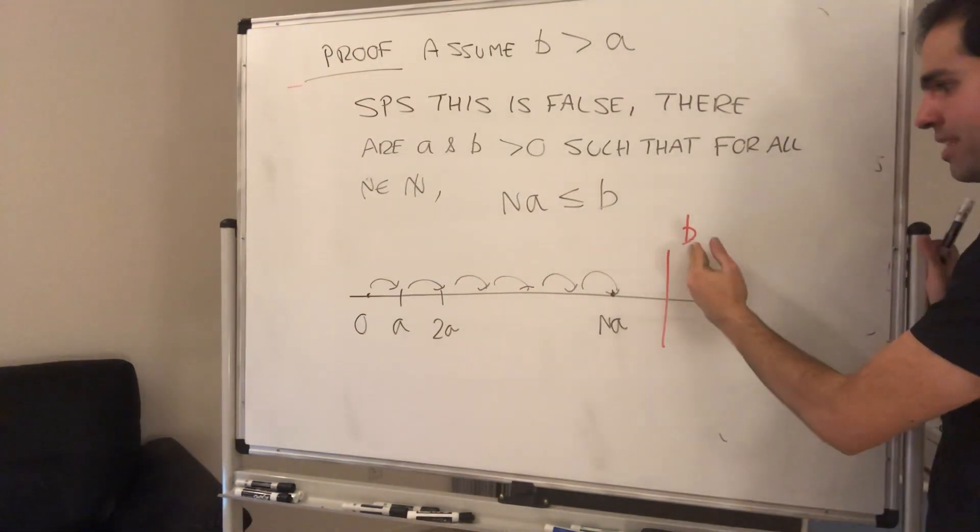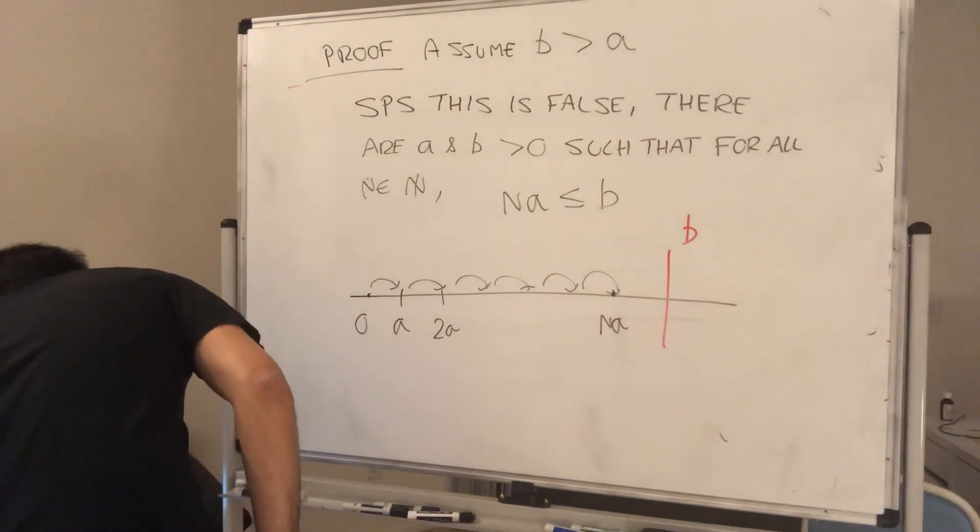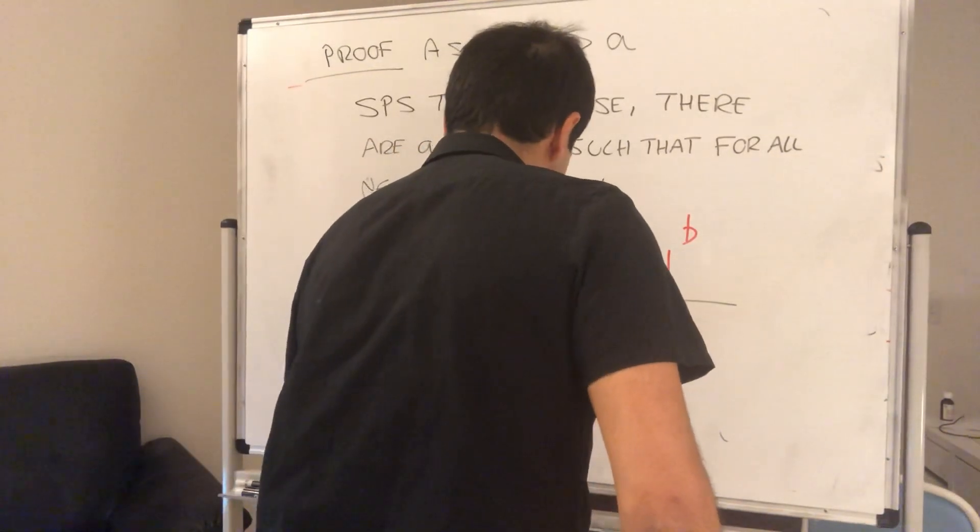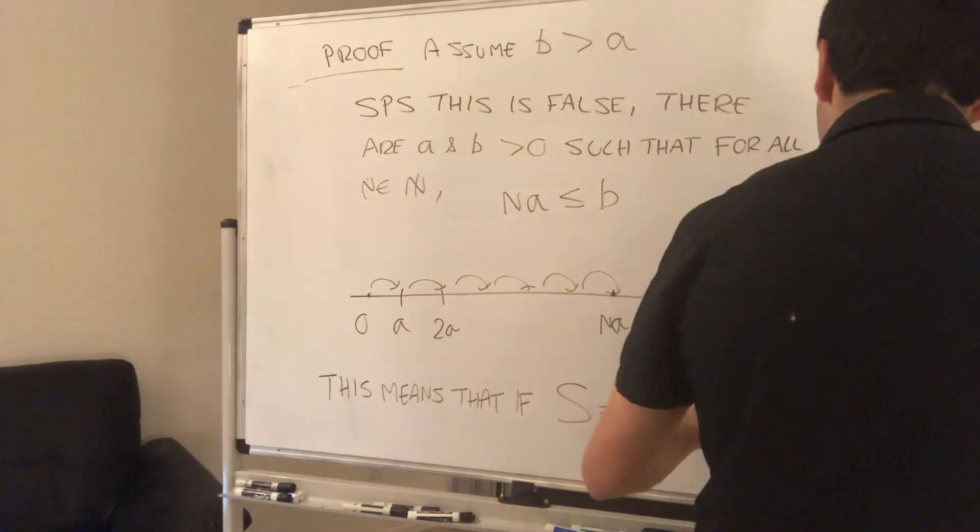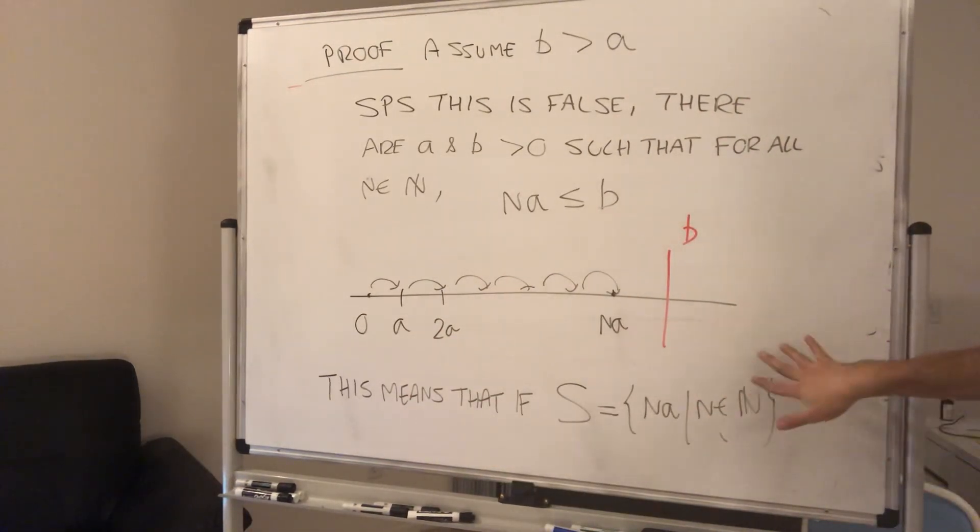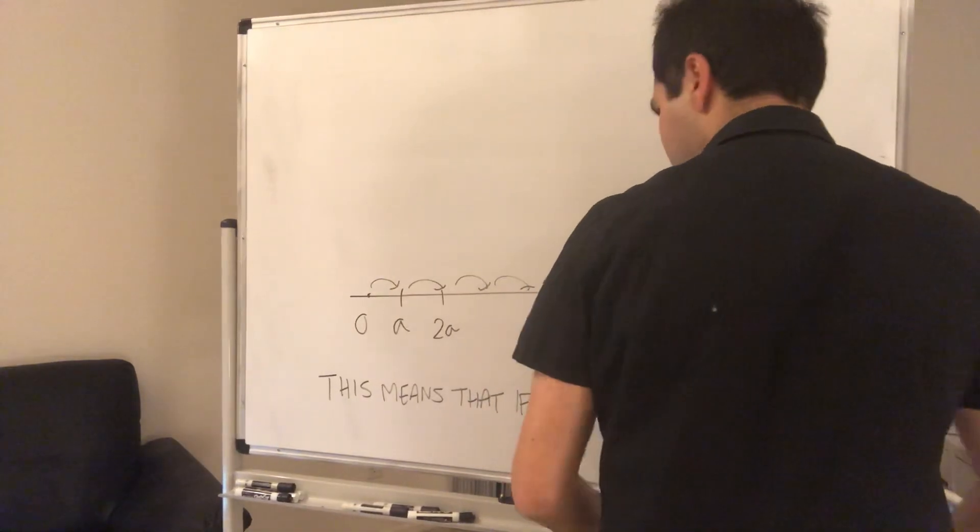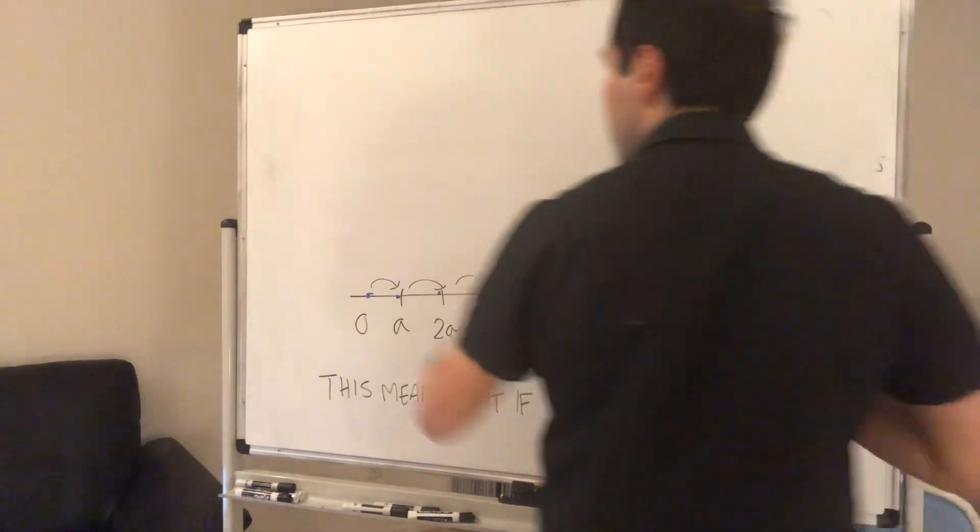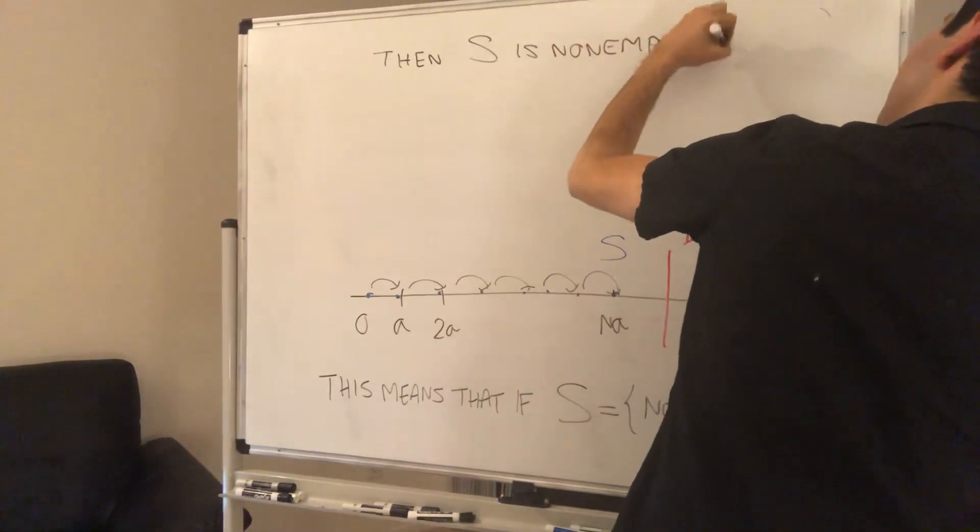And in particular, what does that mean? It means that B is actually an upper bound for all those numbers. So if you let S be the set of NA where N is a natural number, it's not empty - A is in it because it's smaller than B. Then it's not empty and moreover it's bounded above by the number B. So S is just this whole thing. Then S is not empty and bounded above by B.